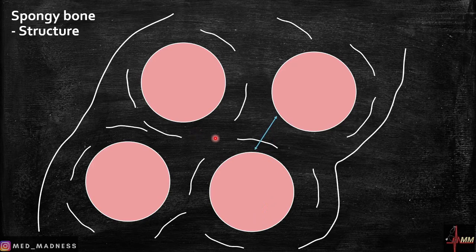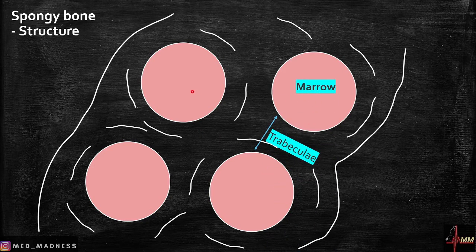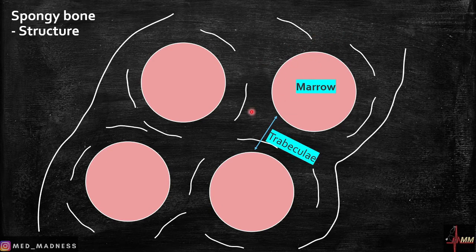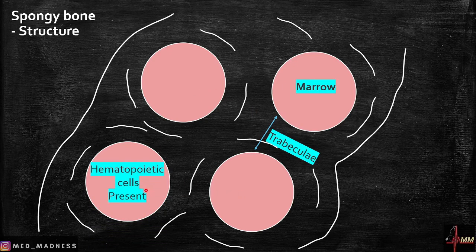The spaces enclosed between the trabeculae contain bone marrow with hematopoietic stem cells, which produce blood cells such as red blood cells, white blood cells, and platelets.